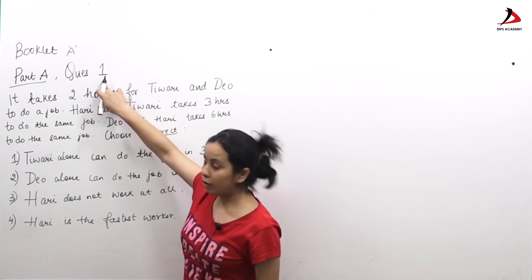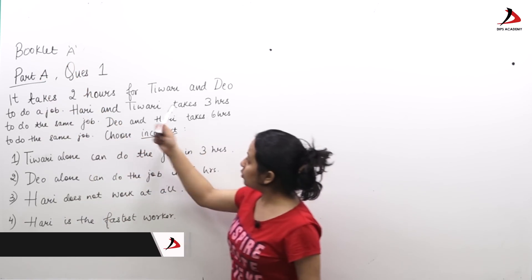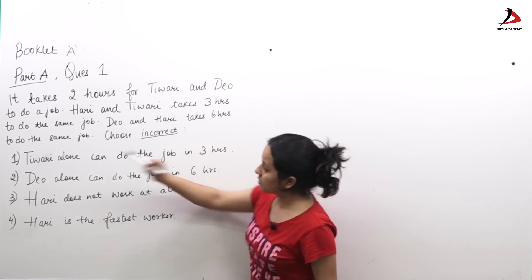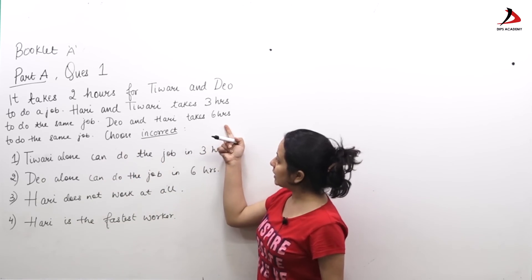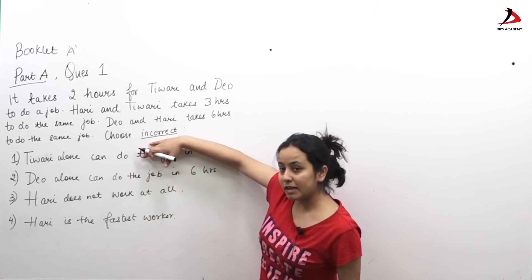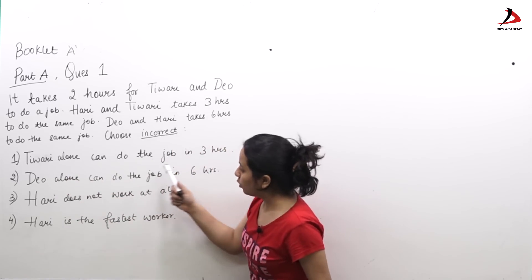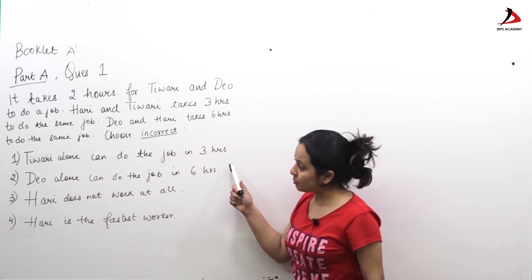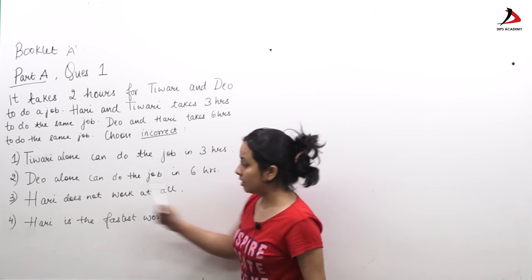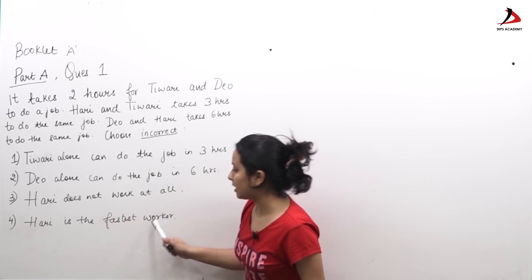This is question number 1 of Part A, Booklet Code A. It states that it takes 2 hours for Tiwari and Dio to do a job, Hari and Tiwari take 3 hours to do the same job, and Dio and Hari take 6 hours to do the same job. We have to choose the incorrect option. Option 1: Tiwari alone can do the job in 3 hours. Option 2: Dio alone can do the job in 6 hours. Option 3: Hari does not work at all. Option 4: Hari is the fastest worker.